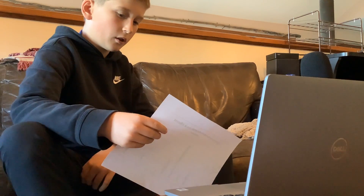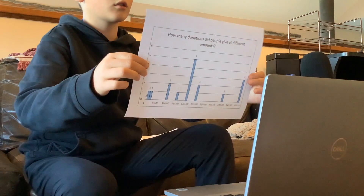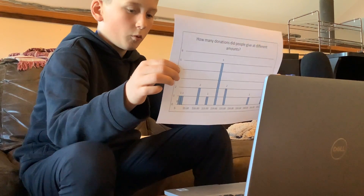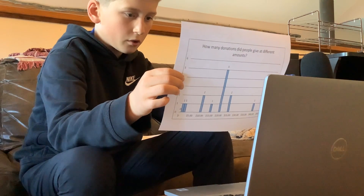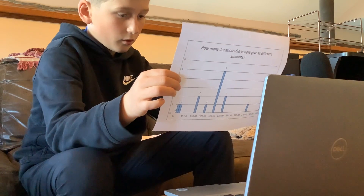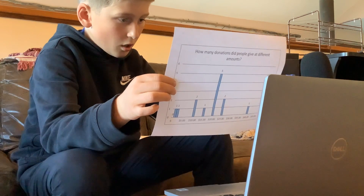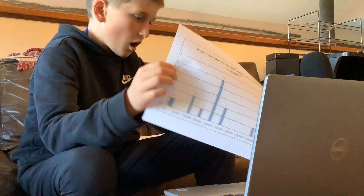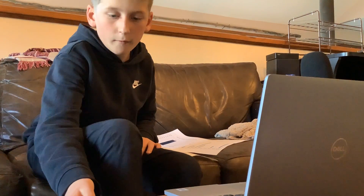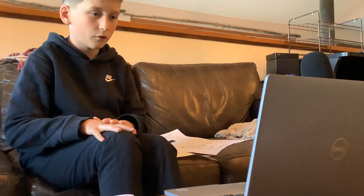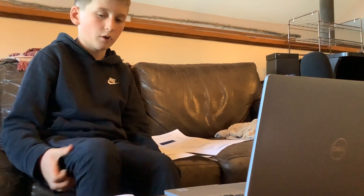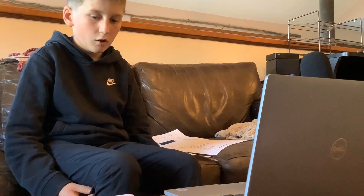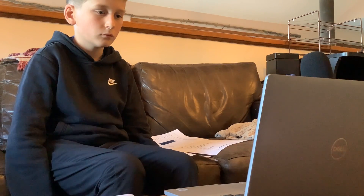My last chart shows how many donations people gave at different amounts. One person gave $1, one gave $2, two people gave $10, one gave $15, five people gave $20, two gave $25, zero gave $30, zero gave $35, one gave $40, zero gave $45, and three people gave $50. I discovered from my project that we're more likely to get a donation if we do it in person.